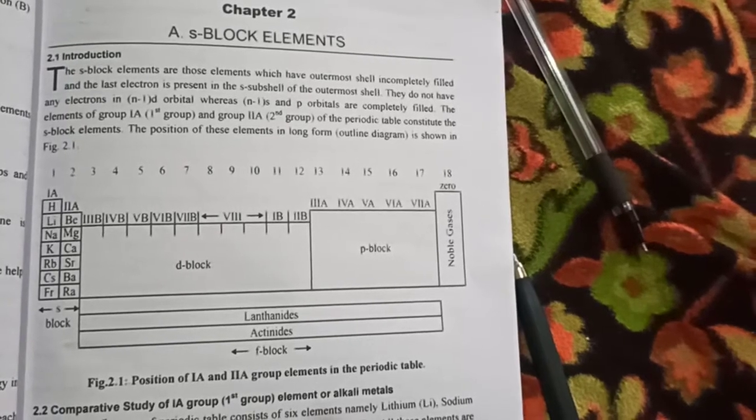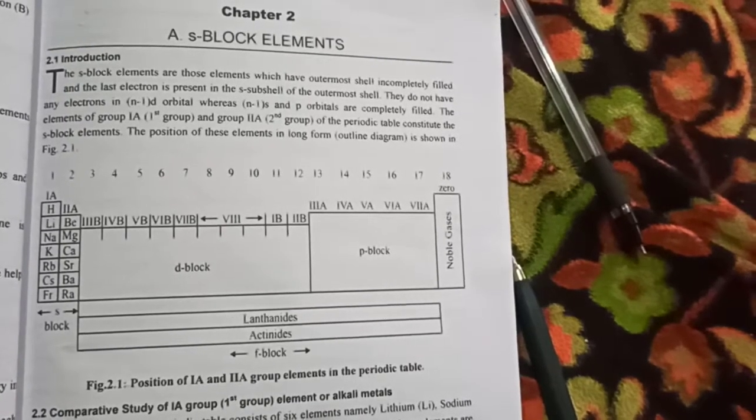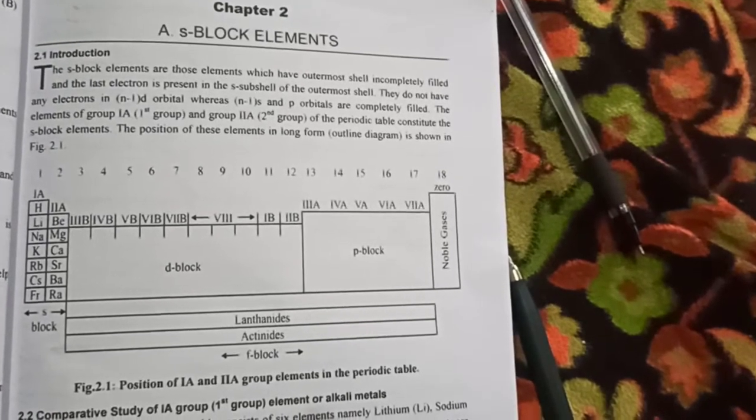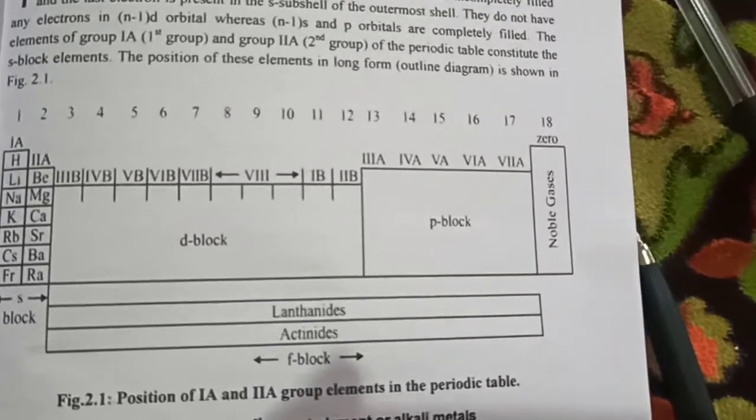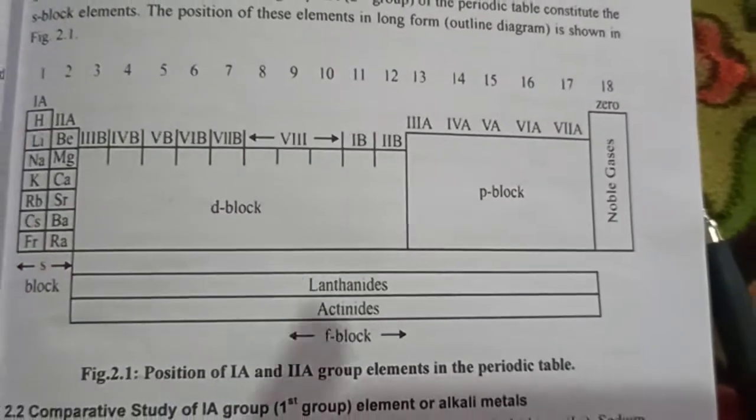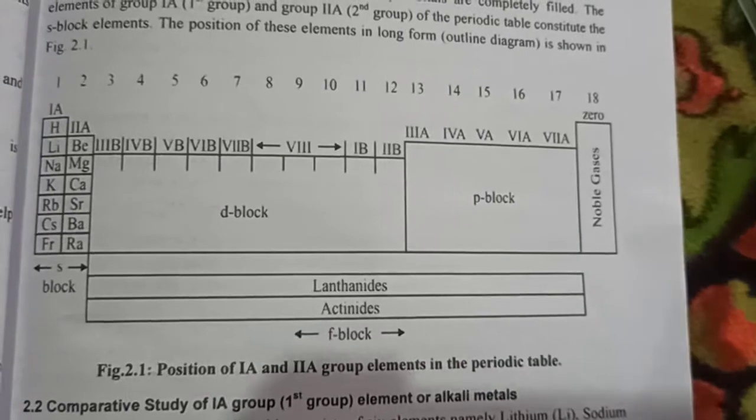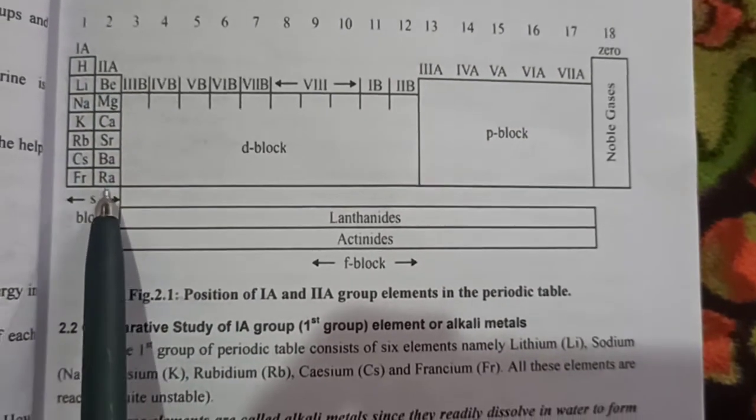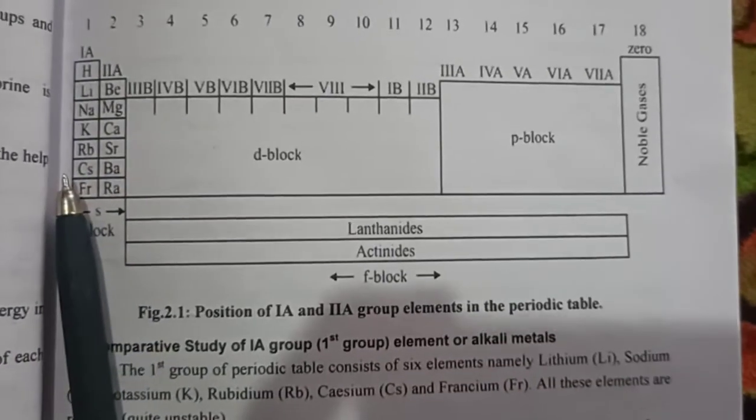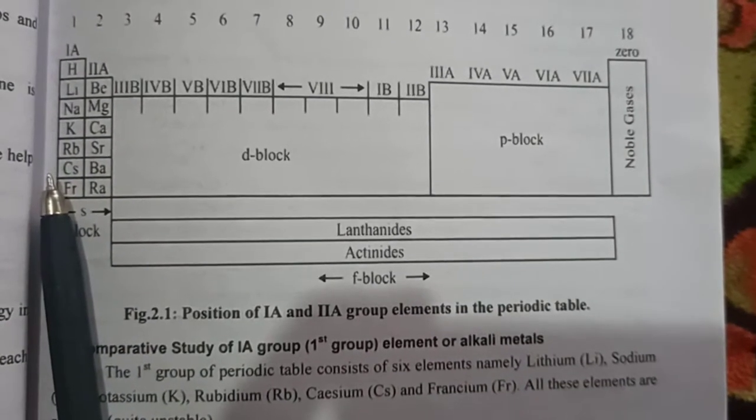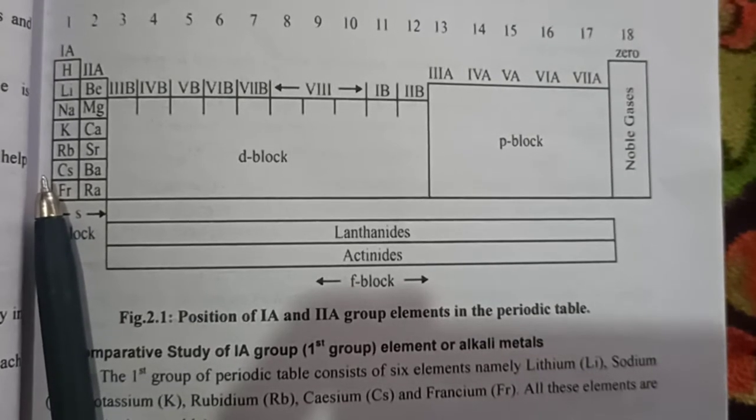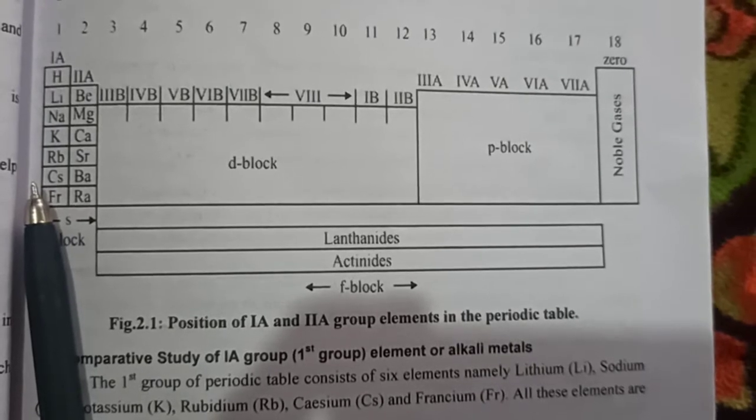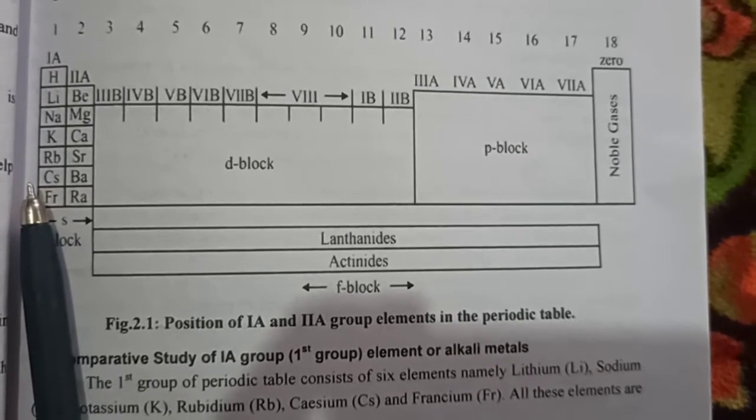Dear students, today we are going to discuss S-block elements which is in chapter number 2. Now, look at this periodic table. What is S-block element? The elements which are present in the block denoted by S are called S-block elements. Why are they called S-block elements? Because in the electronic configuration of these elements, the last electron enters in the S-atomic orbital.